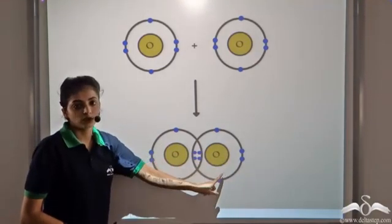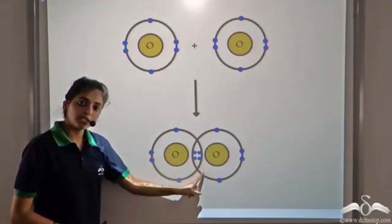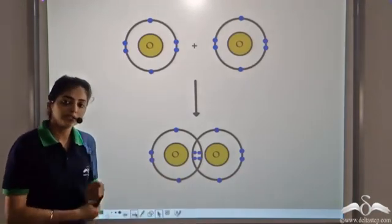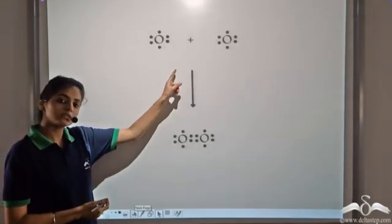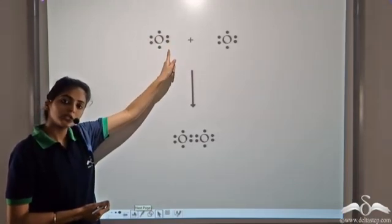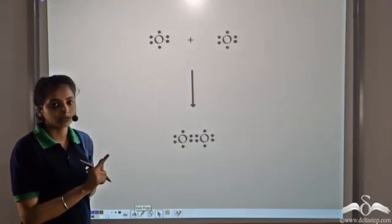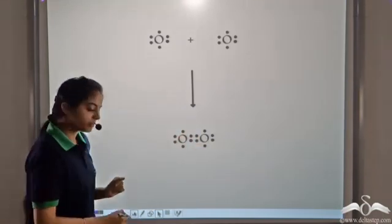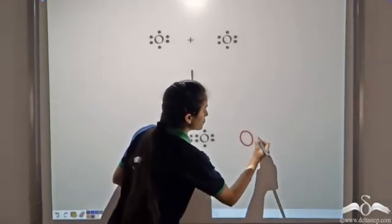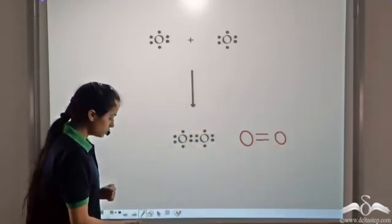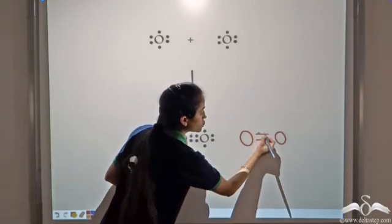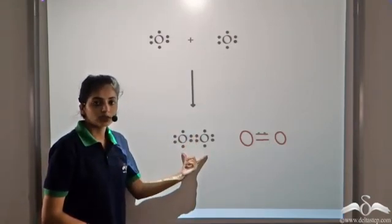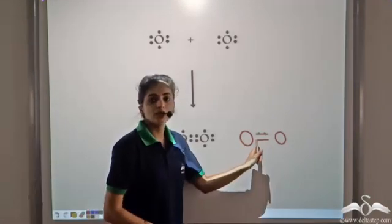Each oxygen atom now has eight electrons, satisfying the octet structure. This is a covalent compound. We can represent it by writing the chemical symbol and showing the valence electrons. Since four electrons are being shared between the two atoms, we make a double covalent bond, where each bond represents two electrons, showing that four electrons are shared in total.